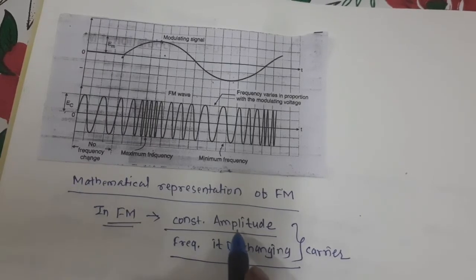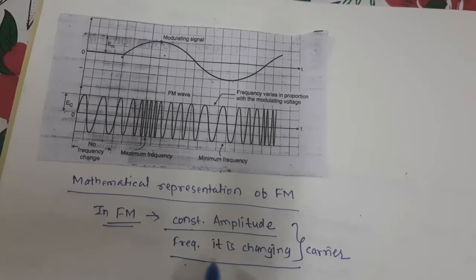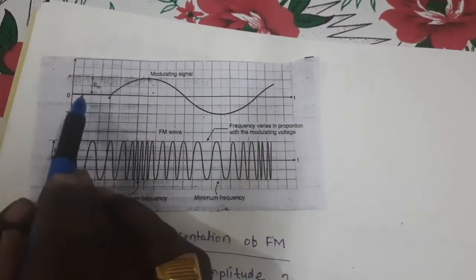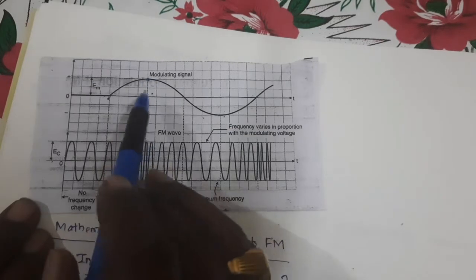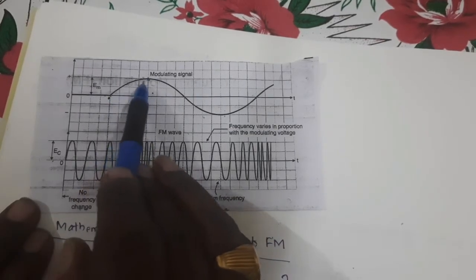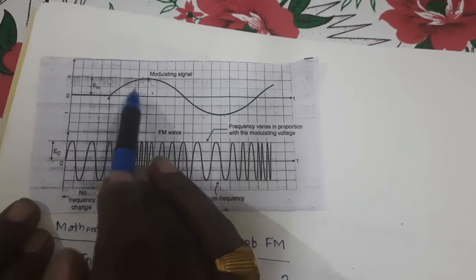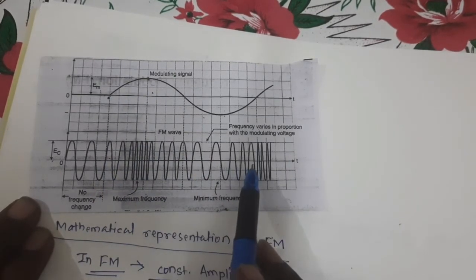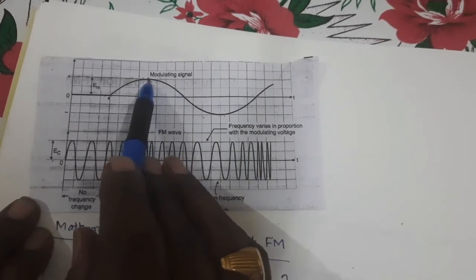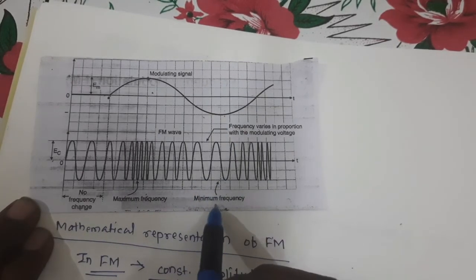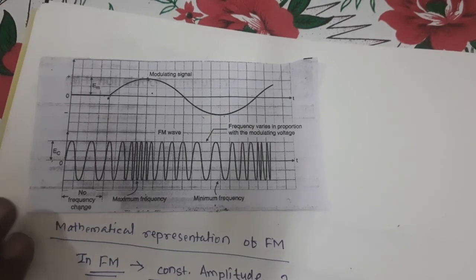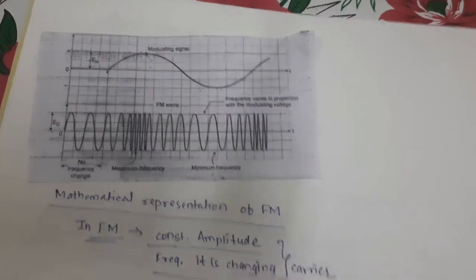In frequency modulation, the amplitude of the carrier remains constant while the frequency is changing — it is changing with respect to the instantaneous change in amplitude of the modulating signal. When the amplitude of the modulating signal is zero, there is no frequency change in the carrier. But if the instantaneous amplitude of the modulating signal is changing, then the carrier frequency also changes automatically. At peak amplitude of the modulating signal, frequency is maximum; at peak negative amplitude, minimum frequency is observed. So frequency is changing continuously.